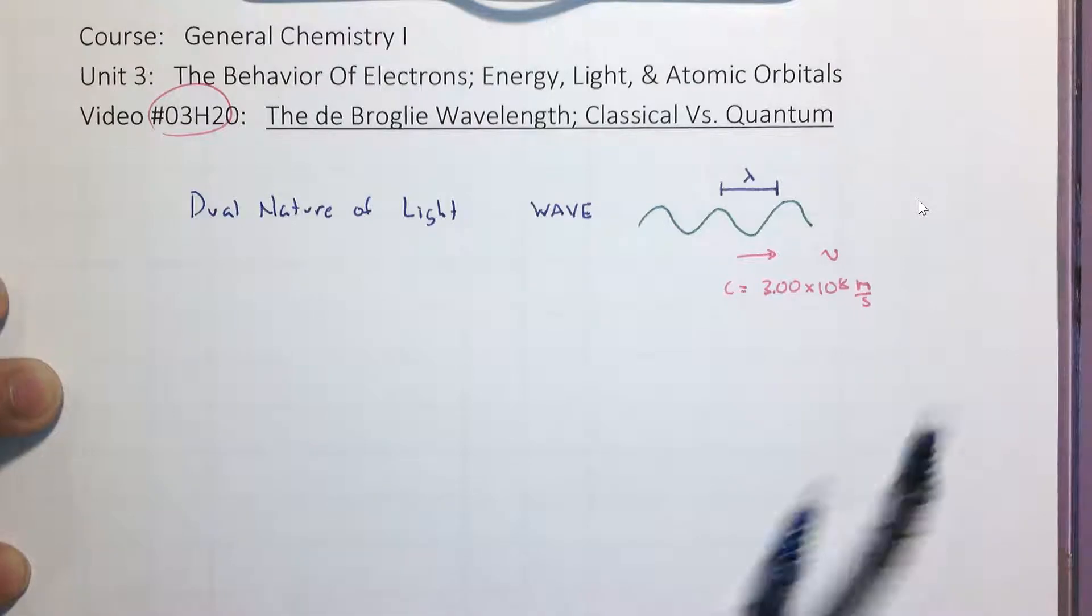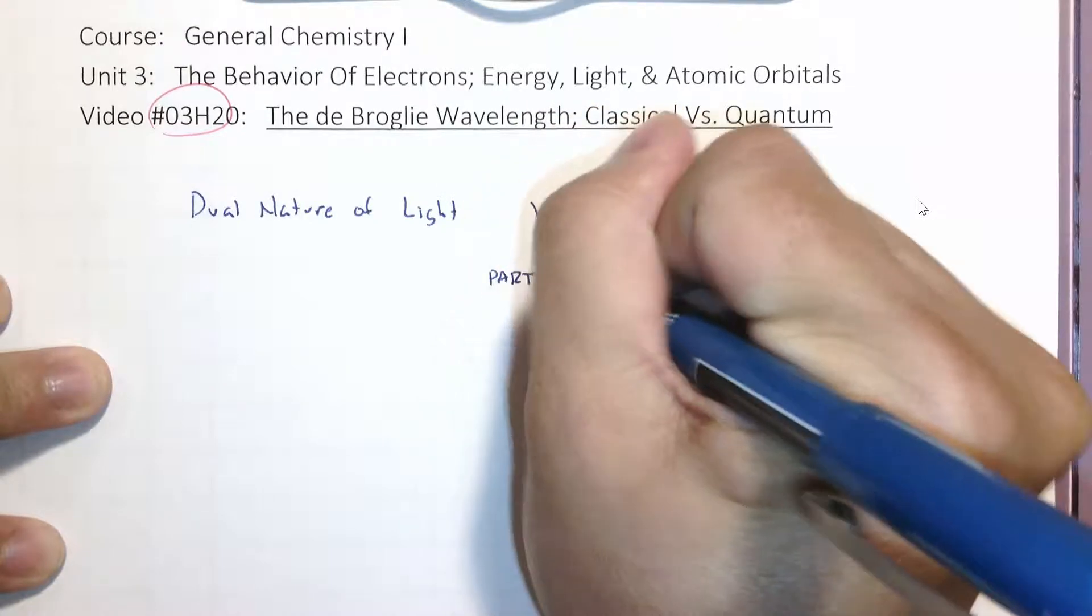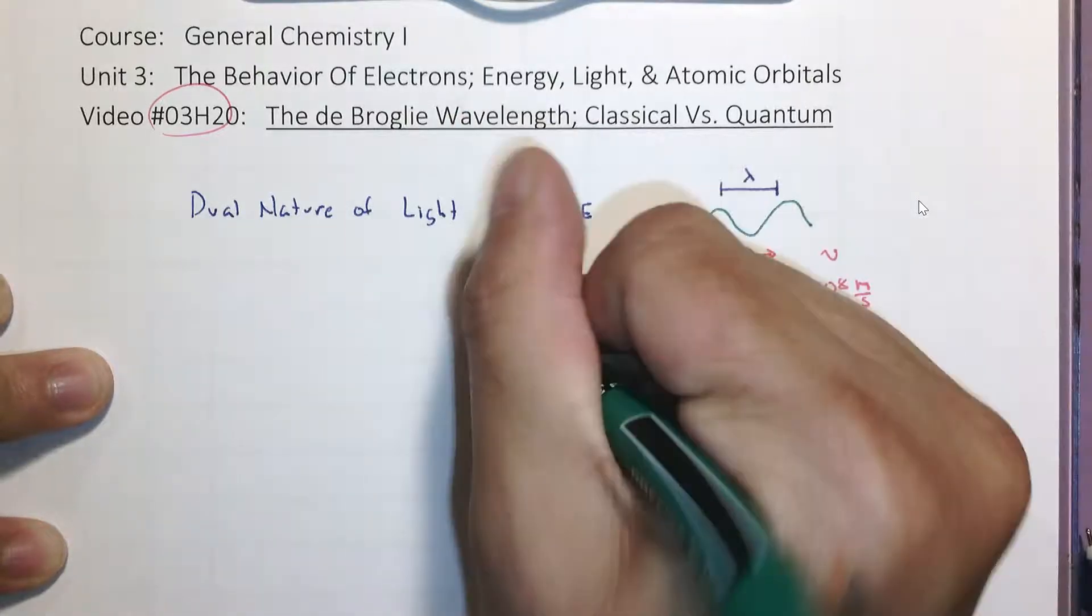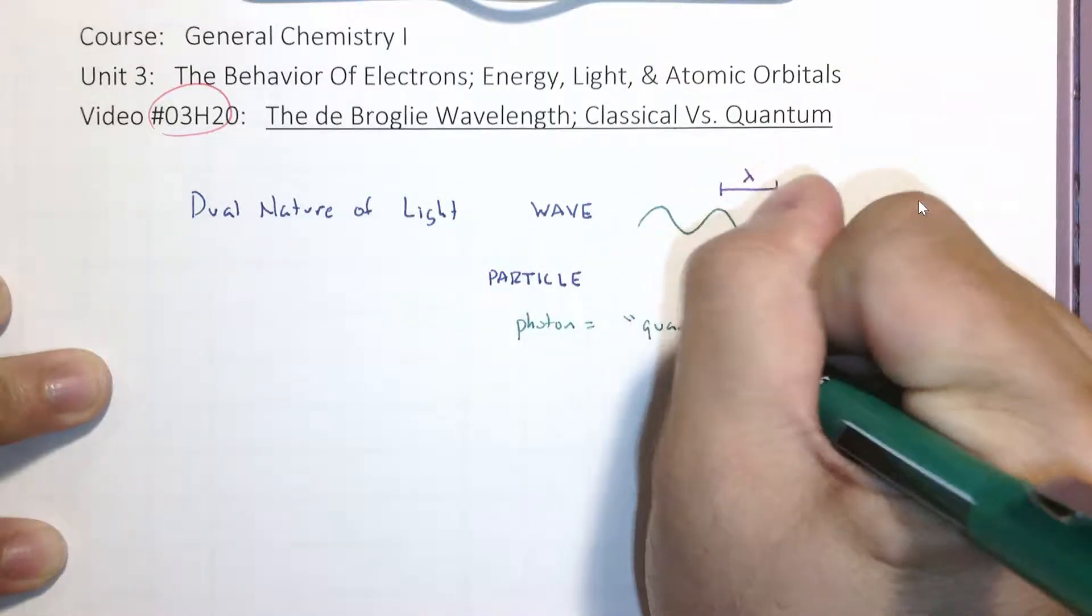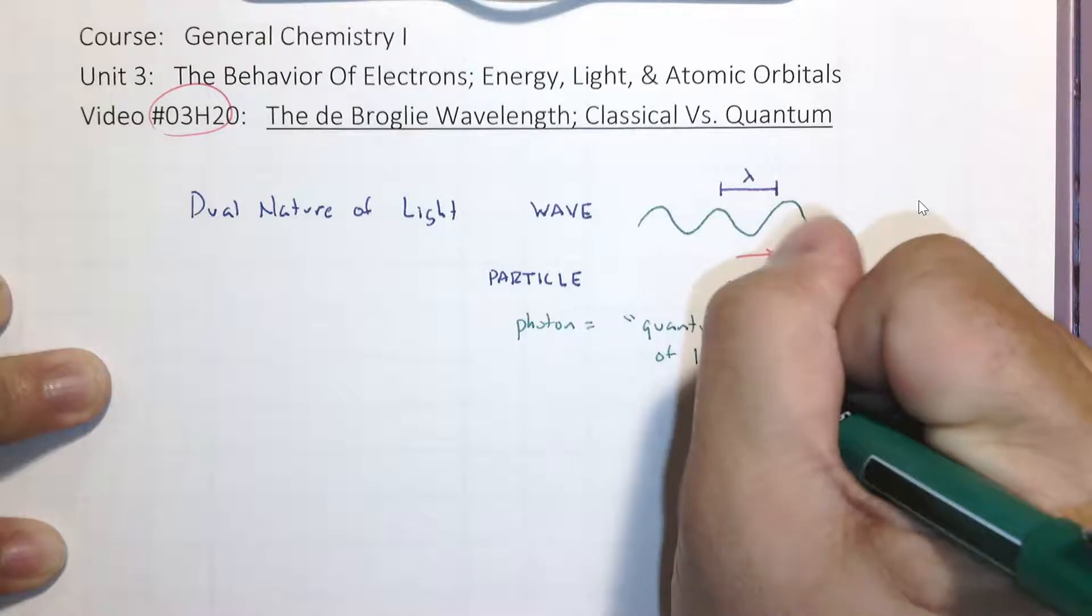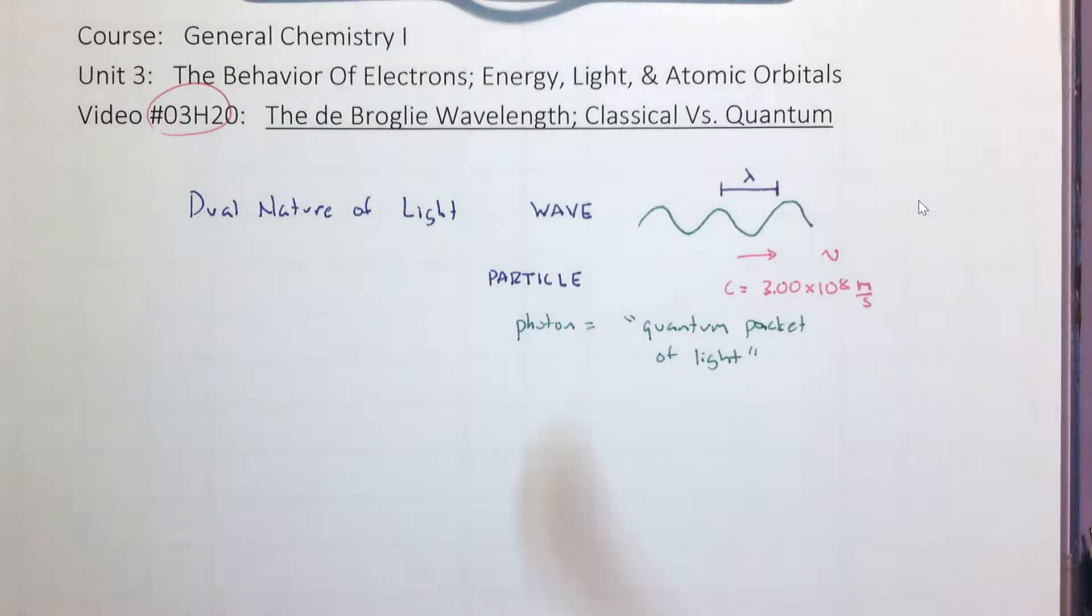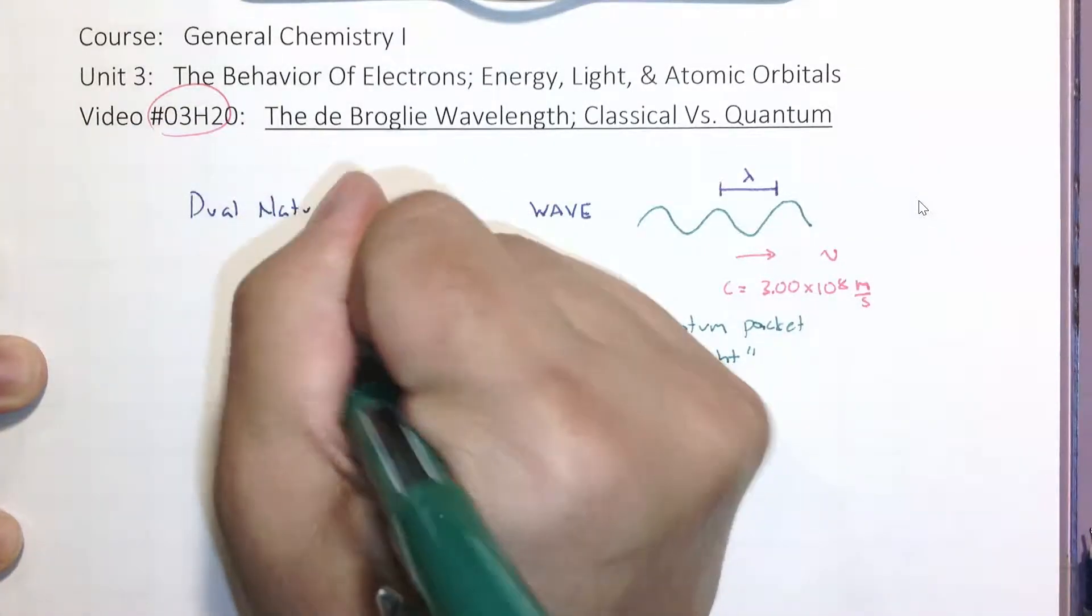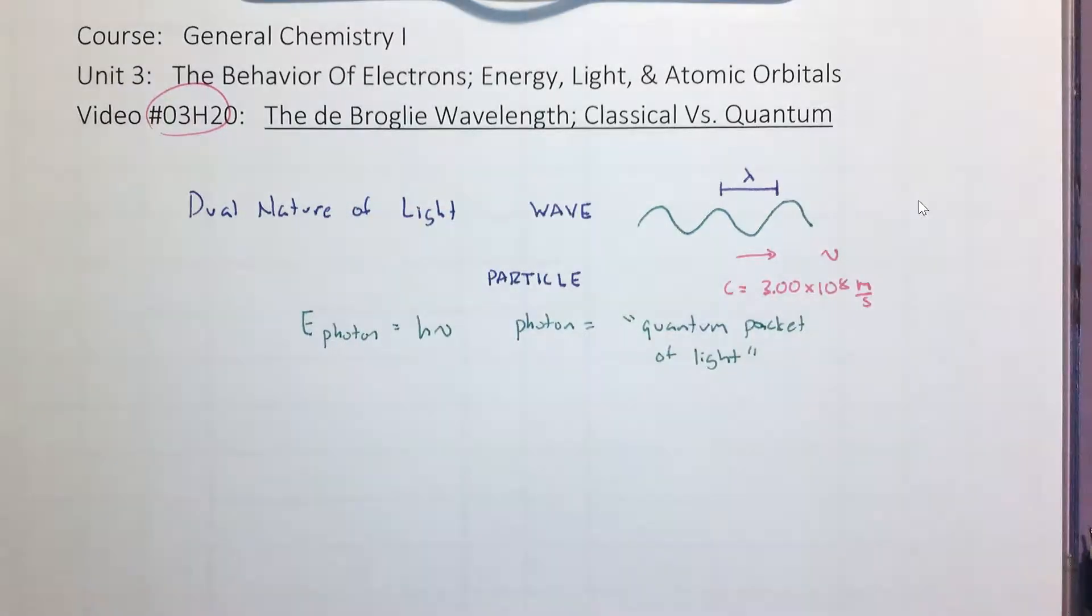The other personality is particle. And light does have characteristics of both. And for particle, let's think of a photon, right? A photon equals a quantum packet of light. And we're familiar with this because we can calculate the energy of a photon using Planck's constant and its frequency of light. E photon equals Planck's constant times frequency.